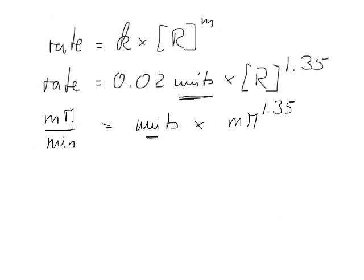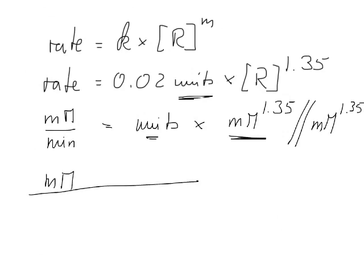So in order to find the units we simply divide both equations by this one here. So we have divided by millimolar to the power of 1.35. And we get millimolar divided by minute times millimolar to the power of 1.35. And that would be our unit here because that cancels out.